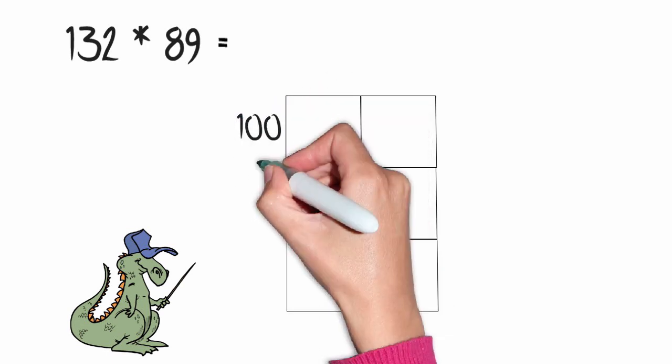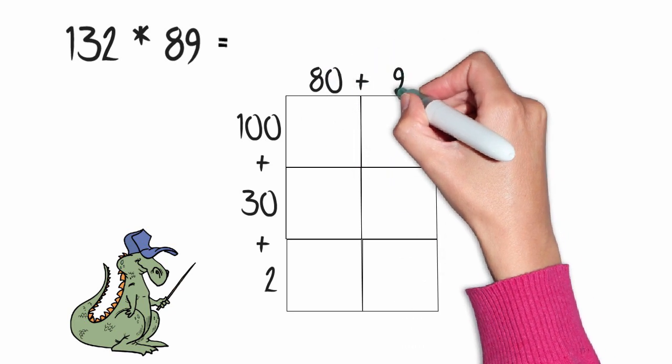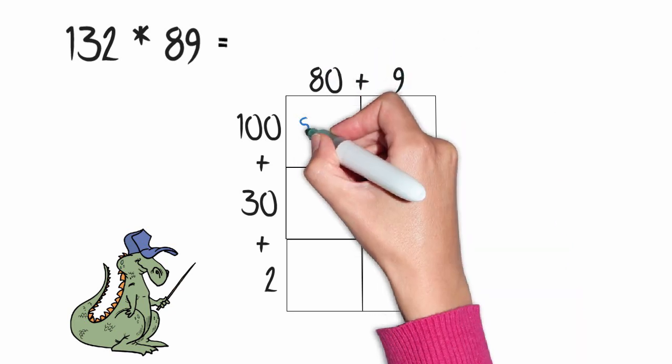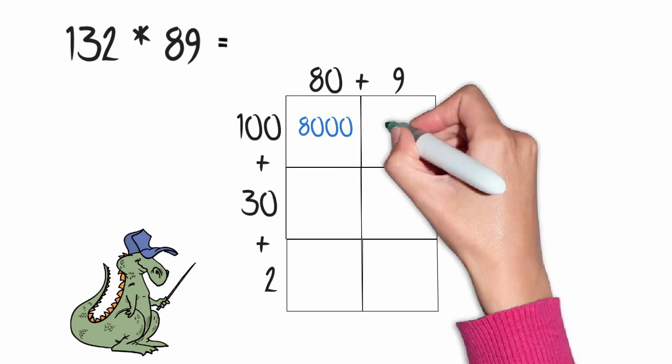132 is 100 plus 30 plus 2. And 89 is 80 plus 9. 100 times 80 is 8,000. 100 times 9 is 900.